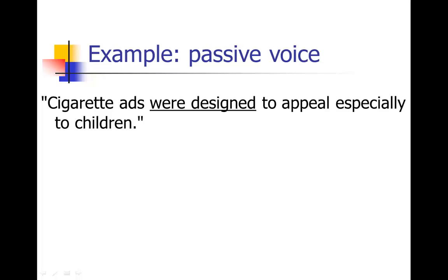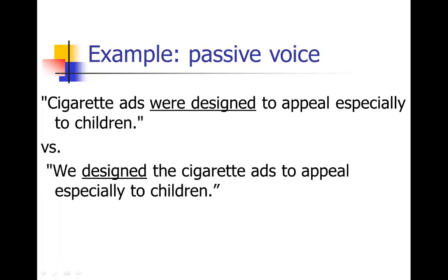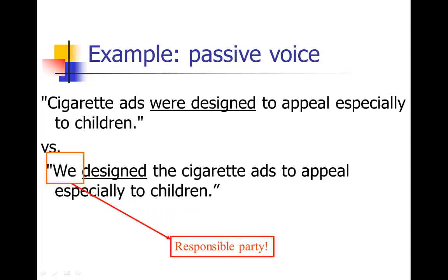Here's another example of a passive voice sentence where the subject has been omitted: Cigarette ads were designed to appeal especially to children. Notice the passive verb were designed, and the object — what was designed — is the cigarette ads. Who designed them? When you read this, it's almost like they just happened that way — nobody's responsible. You can see why people might want to use the passive voice in some cases: it takes away the subject, the responsible party. Contrast that to the active version: We designed the cigarette ads to appeal especially to children — which forces you to have a responsible party.